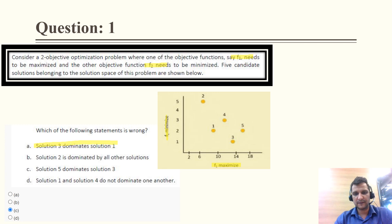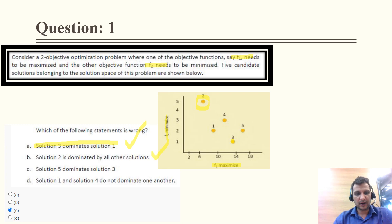Solution 3 dominates Solution 1 — this is the correct statement. Solution 2 is dominated by all other solutions — this is also true. Solution 5 dominates Solution 3 — this is not the correct answer because 3 and 5 lie on the same line, therefore they cannot dominate each other.